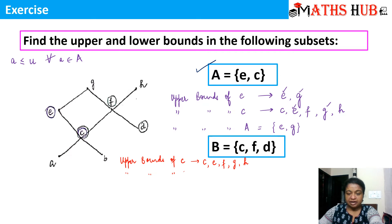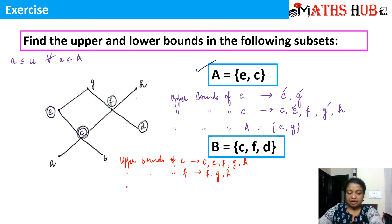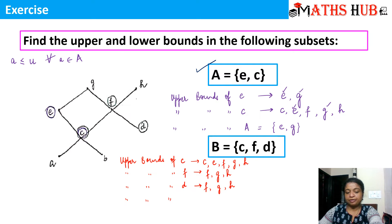Let's calculate the upper bounds of element f. f itself is its upper bound, and all elements above f are g and h. So upper bounds of f are {f, g, h}. Similarly, the upper bounds of d are d itself, plus f, g, and h — so {d, f, g, h}. Now the upper bounds of set B are the elements common to all three: f is common, g is common, and h is common. So the upper bounds of set B are {f, g, h}.